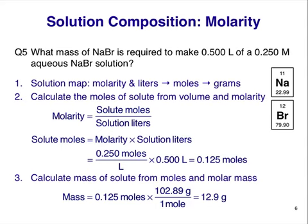This means if we want to make 0.500 liters of a 0.250 M aqueous solution of sodium bromide, we'd dissolve 12.9 grams of sodium bromide solid in enough water to make a total volume of 0.500 liters. The concentration of the solution would be 0.250 M. You can double-check this if you want before we move on to our final example.